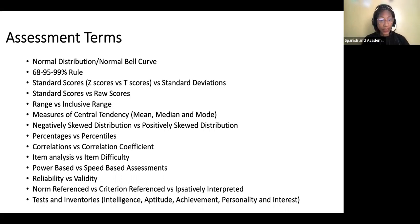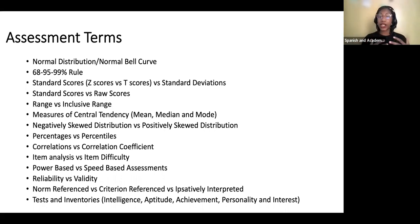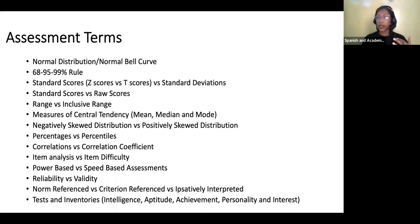Continuing with assessment terms: Reliability versus validity, specifically including types or ways in which we can check for reliability and ways in which we can check for validity. Norm reference versus criterion reference versus ipsatively interpreted. And tests and inventories — or tests and assessments — specifically the intelligence assessments, aptitude assessments, achievement assessments, personality assessments, and interest assessments: what they are, how to identify them, and specific names of different examples.